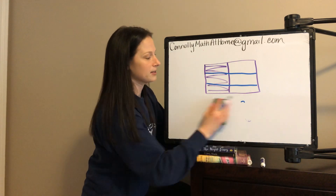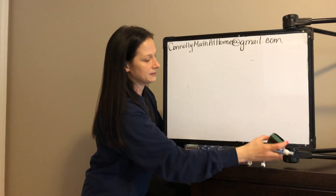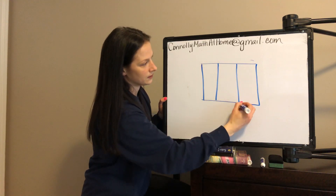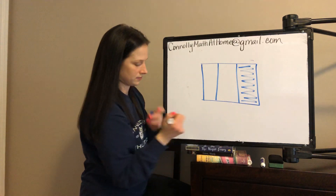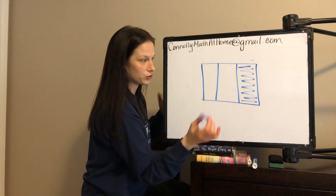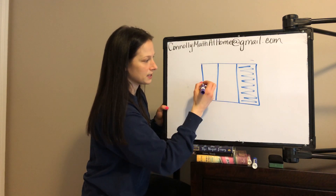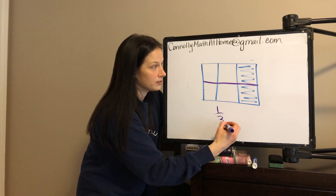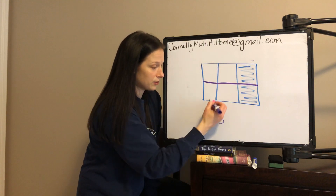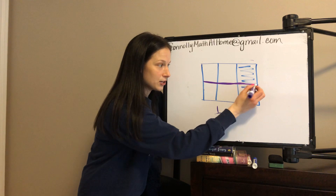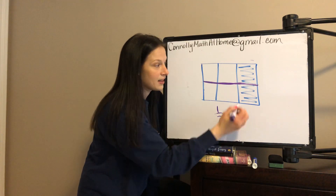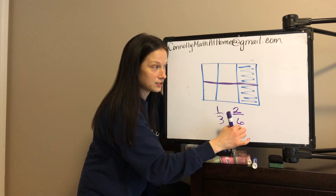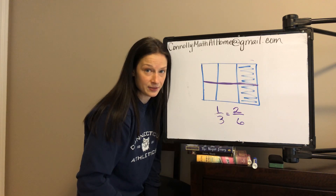Let's say that you have one third shaded in — I'm just putting it over there to show you that you can shade anywhere you want. And you wanted to split this to make an equivalent fraction. We see the blue represents one third. This is a third, this is a third, this is a third. But when I split those thirds, each of them got split in half. I have now two of the smaller pieces shaded in, and six total smaller pieces.